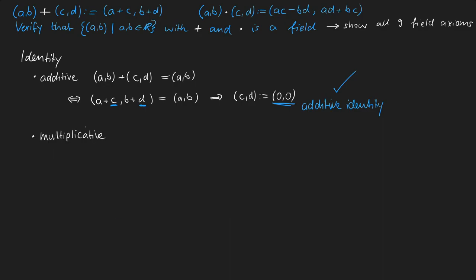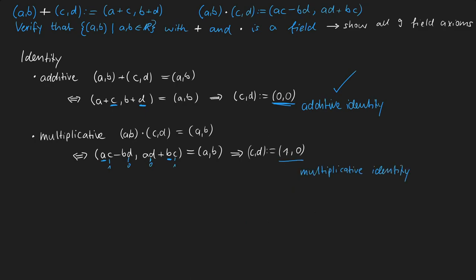For the multiplicative identity we do something similar, only applying the definition of multiplication. We need to find C and D so that (AC−BD, AD+BC) equals (A,B). We can remove the B from the first element by setting D to 0, and keep A by setting C to 1. On the right side of the pair, we set D to 0 and C to 1 to keep B. Therefore the multiplicative identity is the pair (1,0).